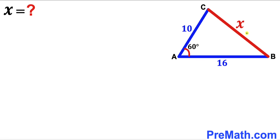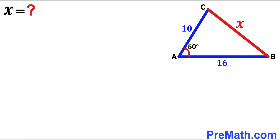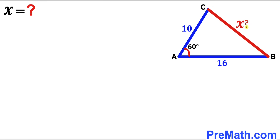In this video we have this triangle ABC as shown in the diagram, such that side length AB is 16 units, side length AC is 10 units, and the angle in between them is 60 degrees. Moreover, side BC is represented by X, and our task is to calculate the value of X — in other words, to calculate the length of side BC.